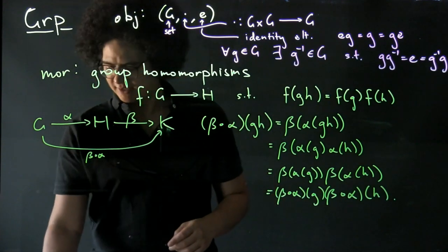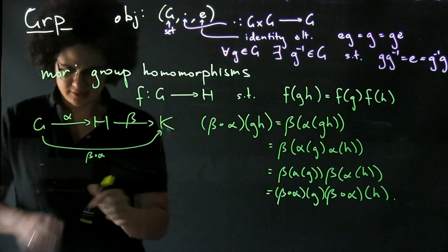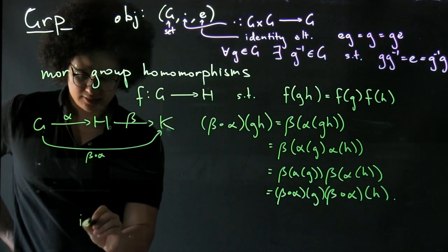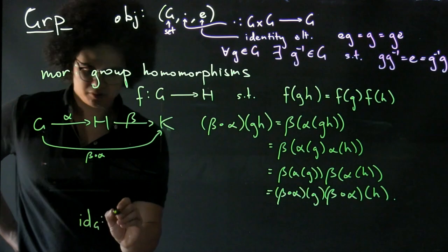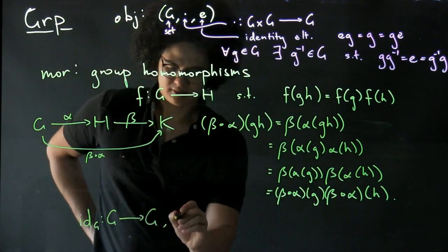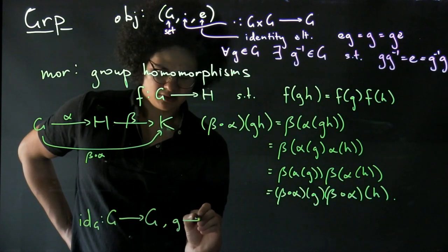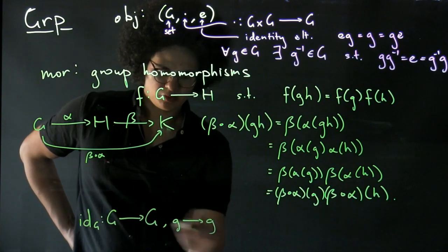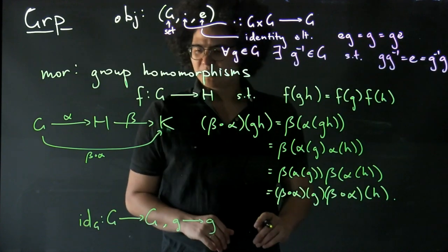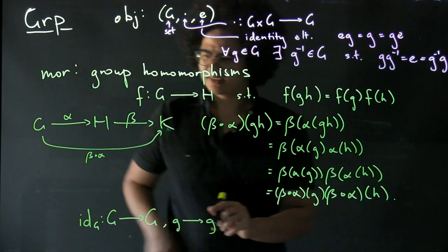It should be fairly clear that our identity on a group, which just sends an element of the group to itself, is a group homomorphism and acts as an identity.